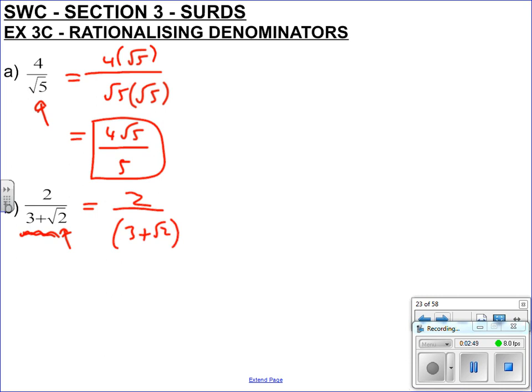We can't just times it by root 2, because we get 3 root 2 on the bottom plus root 2 times root 2, which is 2, so we're still left with an irrational number on the bottom. What we need to do is we need to apply this to our difference of two squares law.